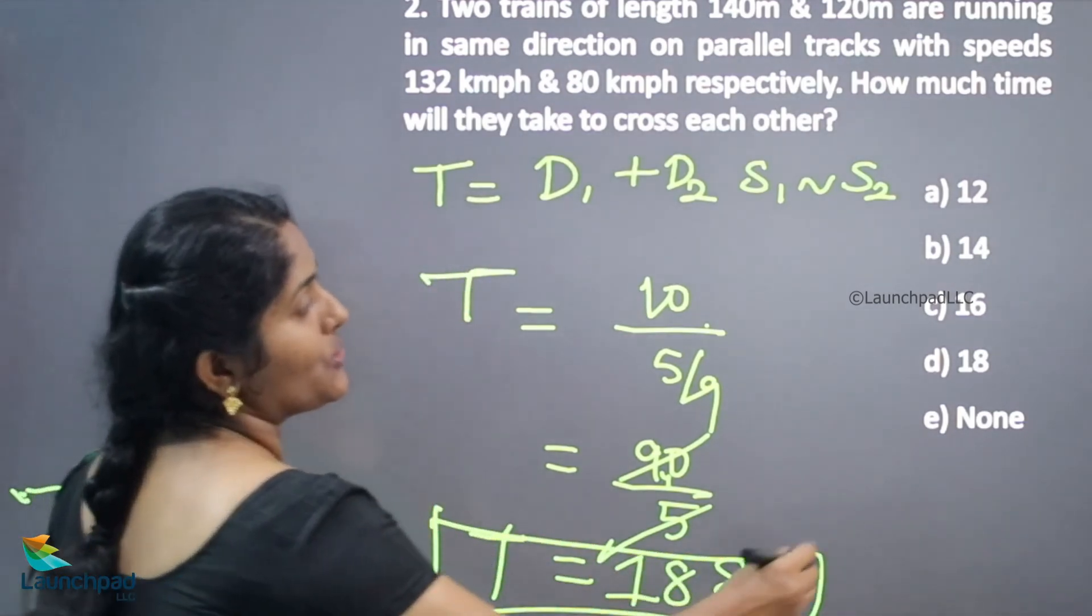So your option B is correct. This is the example of how the train is crossing each other in the same direction. Thank you for watching.